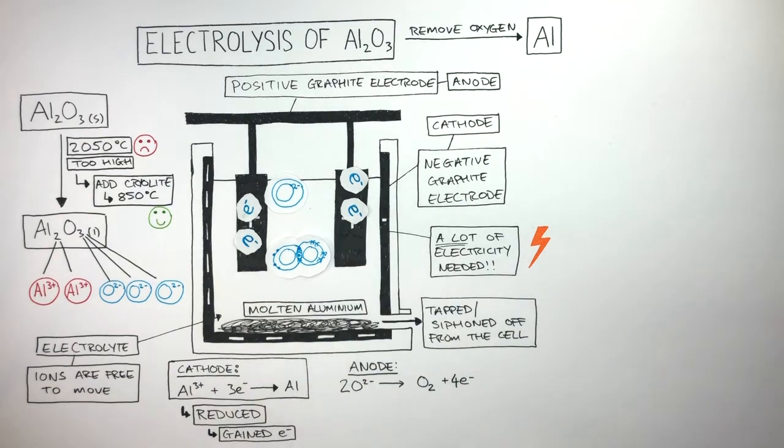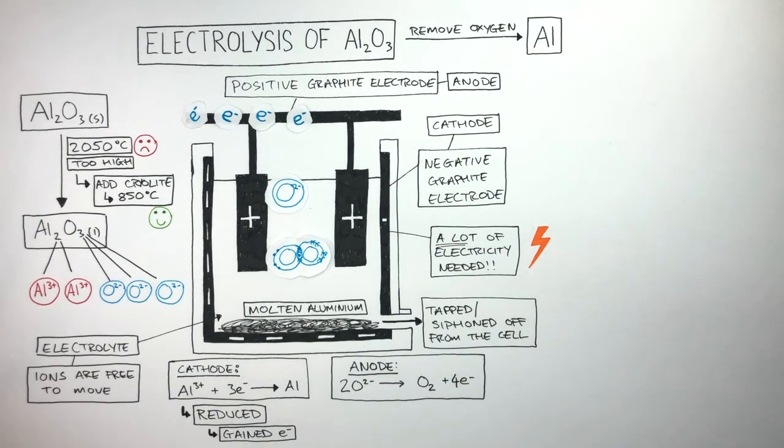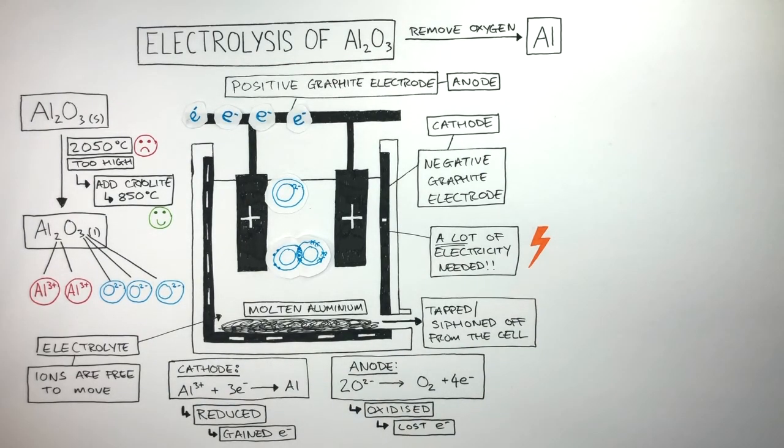These electrons lost at the cathode now flow back towards the anode for the whole cycle to continue again. Because the oxide anions lost electrons, we say they have been oxidized as they have lost electrons. Oxidation is the loss of electrons.